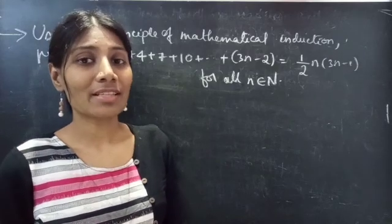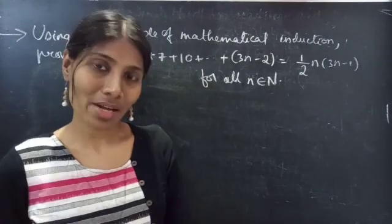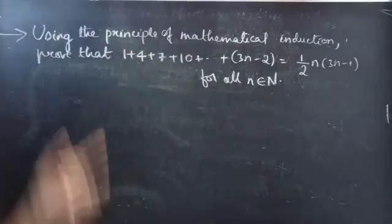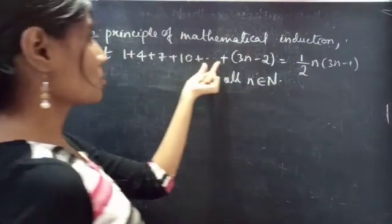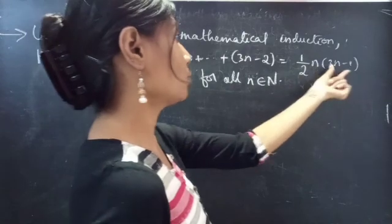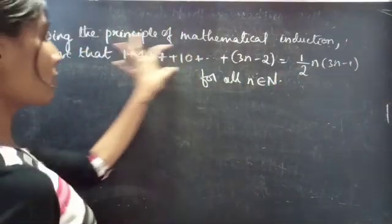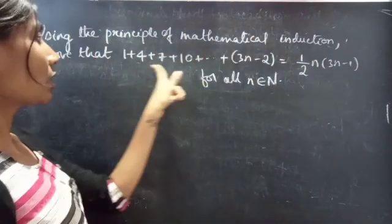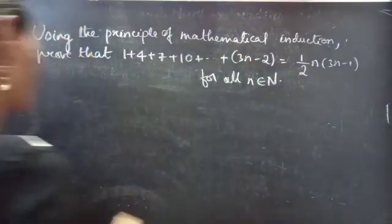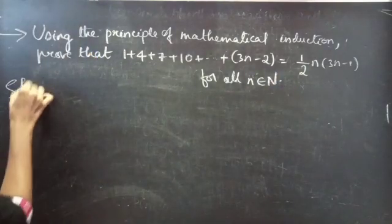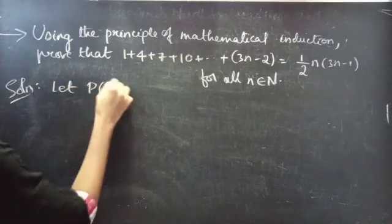Hello everyone, this is Katana. In this video we are going to prove the statement using the principle of mathematical induction. Problem: using the principle of mathematical induction, prove that 1 + 4 + 7 + 10 + ... + (3n - 2) = (1/2) · n · (3n - 1) for all n belonging to natural numbers. Let P(n) be the given statement.